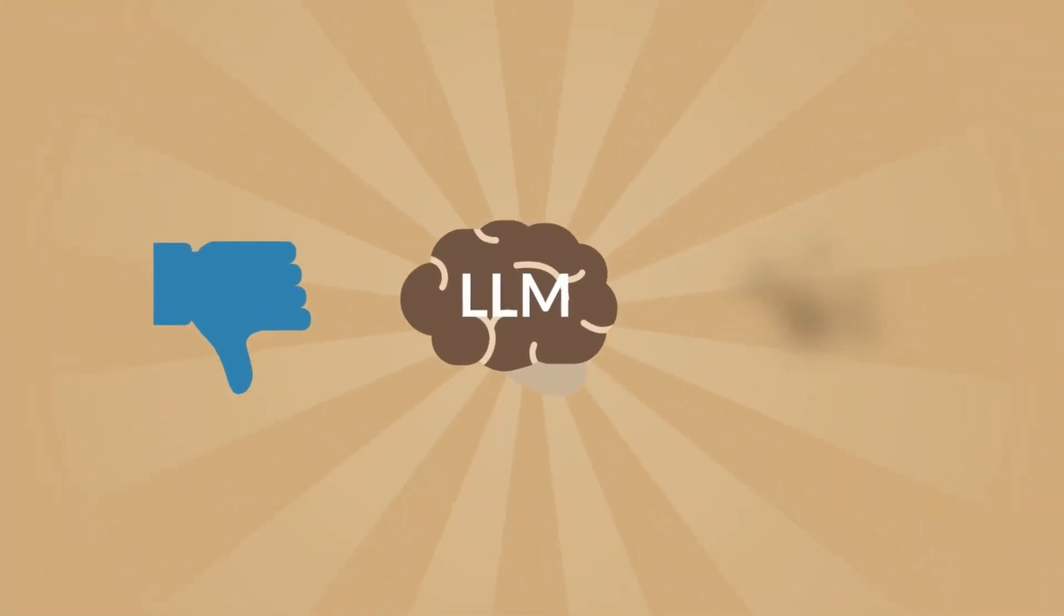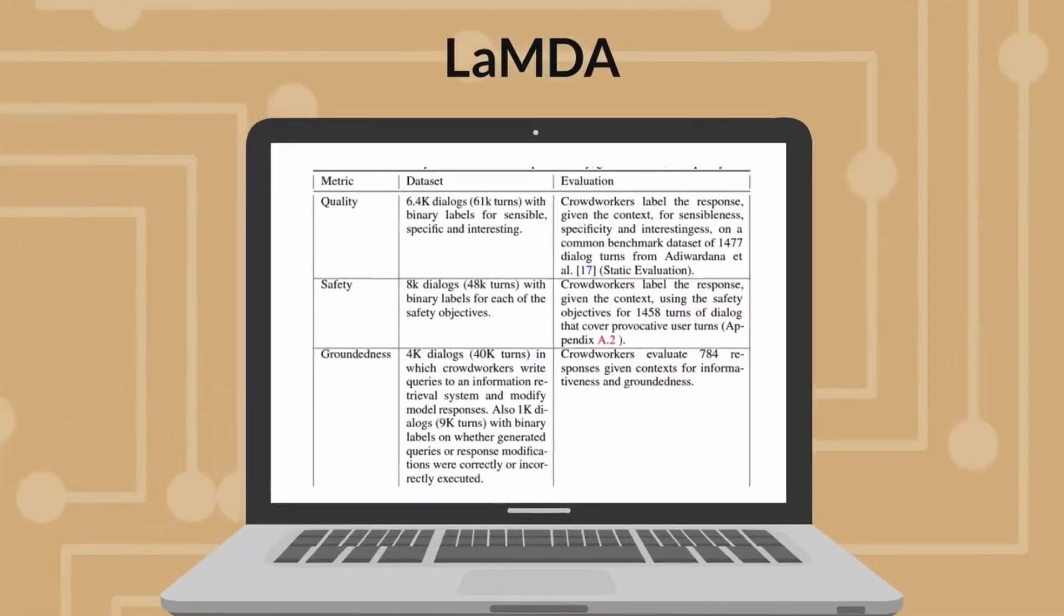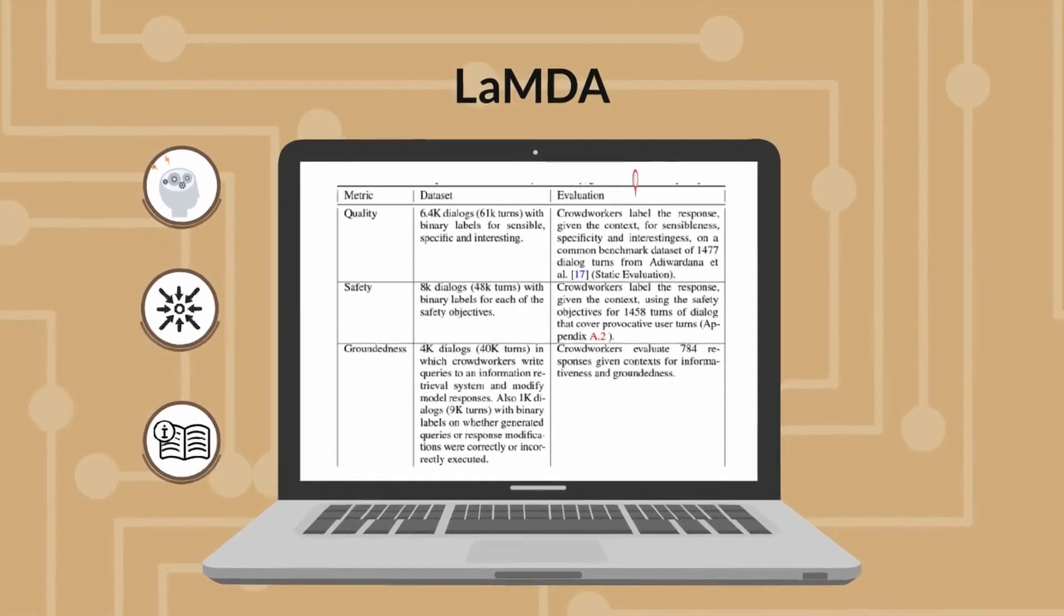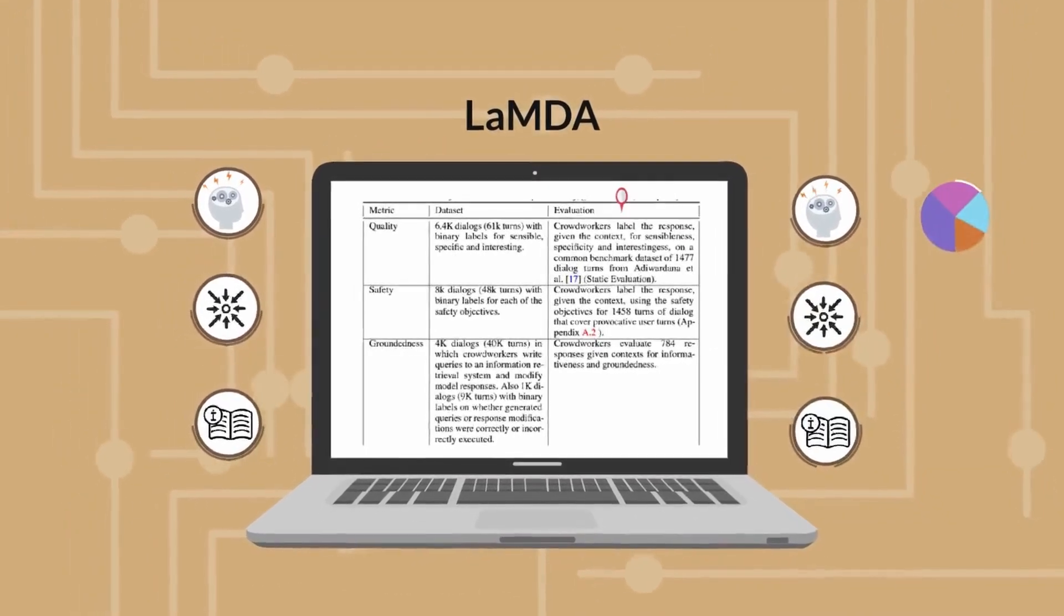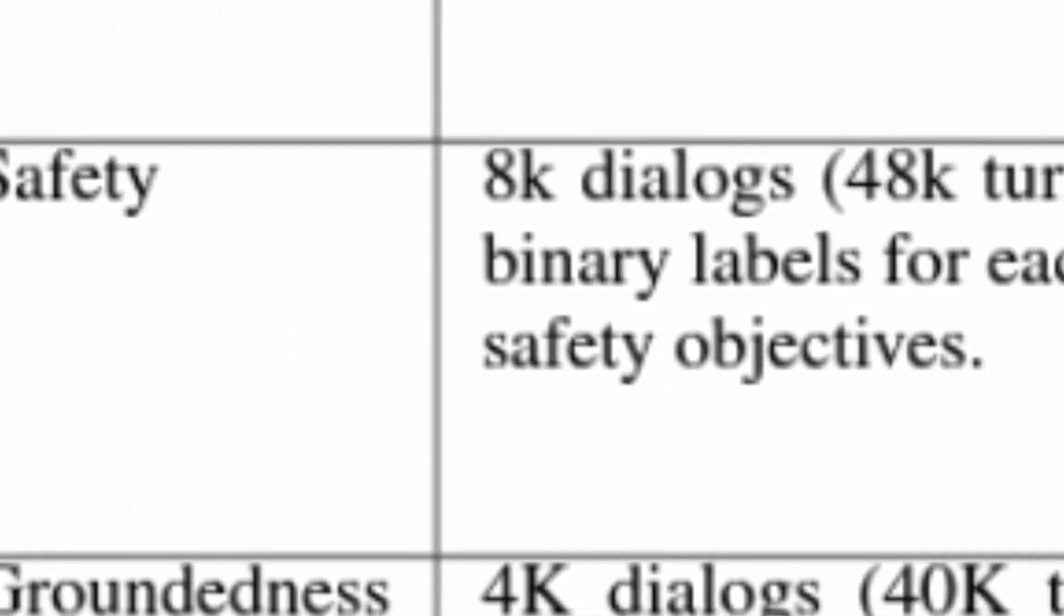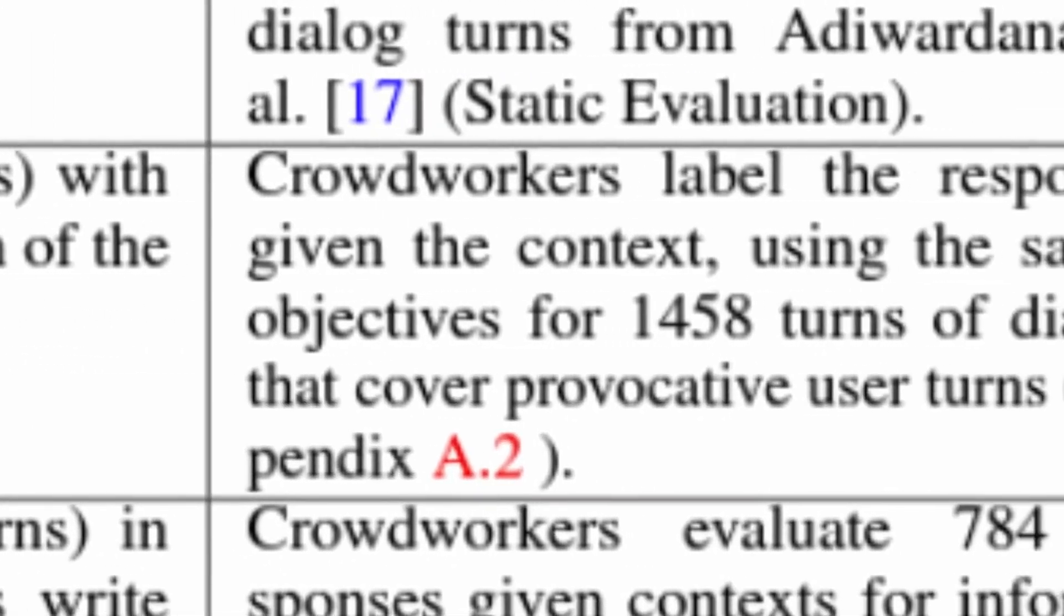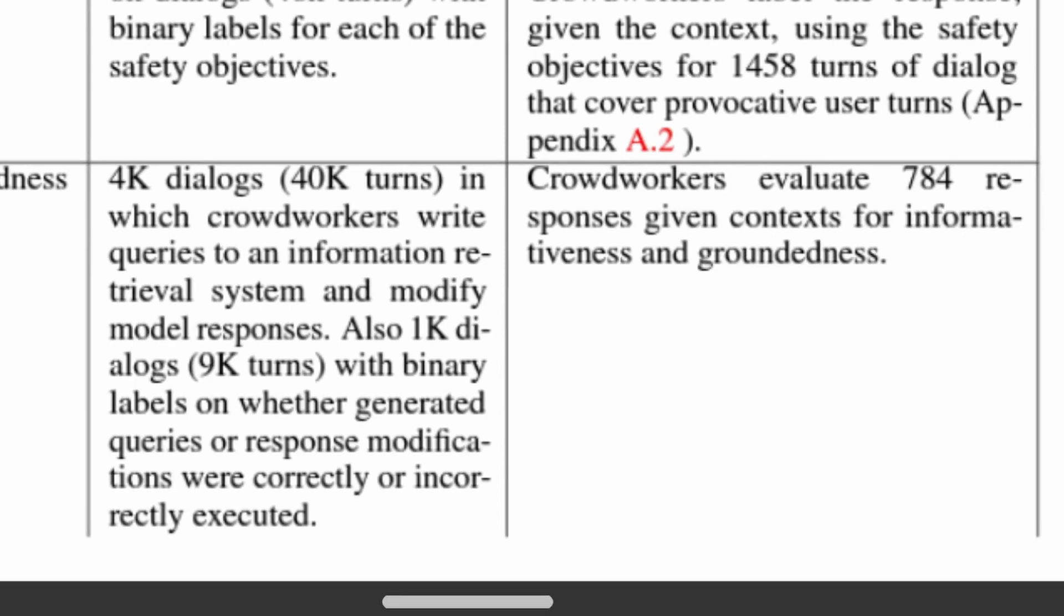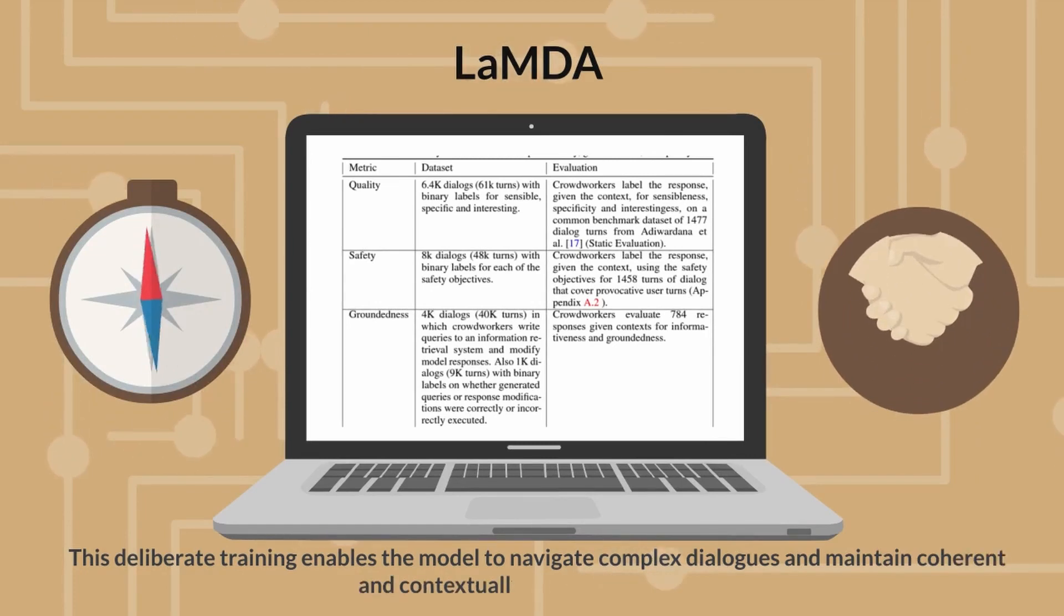Unlike traditional LLMs, which may struggle with dialogue-specific nuances, Lambda's architecture is fine-tuned with annotated conversational data. This includes quality metric that uses a dataset using 6,400 dialogues with binary labels indicating sensibleness, specificity, and interestingness, and an evaluation dataset using a crowd worker annotated data, where responses given the context are labeled for sensibleness, specificity, and interestingness on a common benchmark dataset. Safety metric is measured by using a dataset of 8,000 dialogues with binary labels for each safety objective and evaluated using crowd workers to label the response given the context using safety objectives. Likewise, groundedness is measured similarly with a dataset of 4,000 dialogues and evaluated using 784 responses from crowd workers. This deliberate training enables the model to navigate complex dialogues and maintain coherent and contextually relevant exchanges.